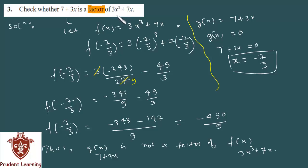Logic यह है कि यह polynomial इस polynomial का factor तभी हो पाएगा जब दोनों के zeros same होंगे। अगर मैं इसका zero निकालता हूँ तो x की value मिलेगी, उस x की value को जब मैं इसमें substitute करता हूँ — finally अगर 7 plus 3x factor है तो 0 मिलेगा, और अगर 0 नहीं मिल रहा है तो 7 plus 3x इसका factor नहीं है। यह working rule आप याद रखेगा, बाकि तो simple mathematics calculation है।